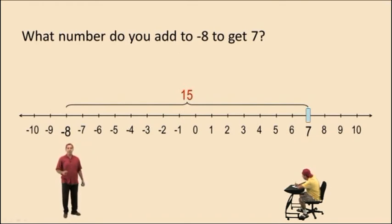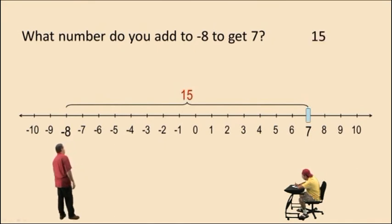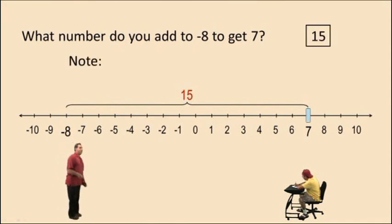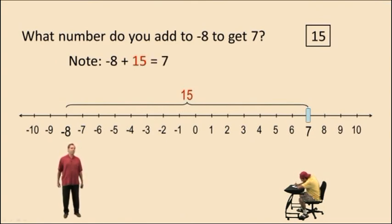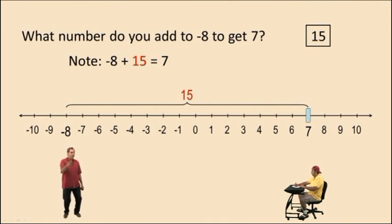So what number do you add to negative 8 to get to positive 7? That is 15. Negative 8 plus 15 is positive 7. So there you go. It's a basic introduction to algebra. We'll be back soon.